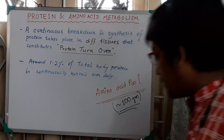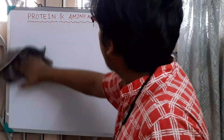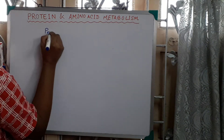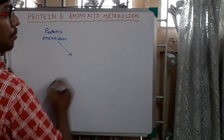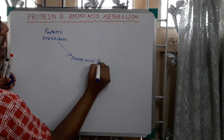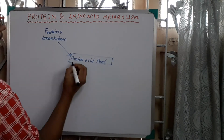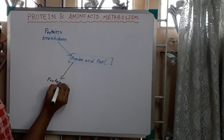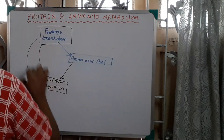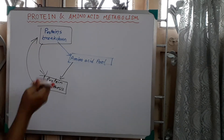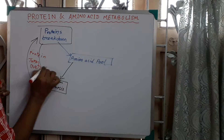Now let's look at a separate diagram to clear your understanding. There is protein breakdown to the amino acid pool. There will be synthesis of amino acids which come into the amino acid pool. From this amino acid pool, new proteins will again be synthesized. Between these processes, there is a continuous dynamic equilibrium — this is called protein turnover.